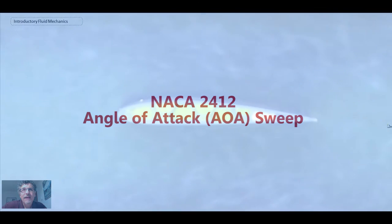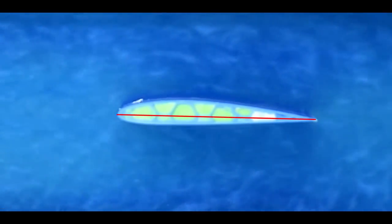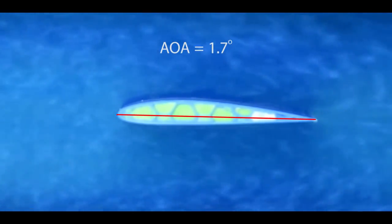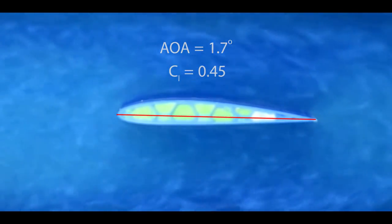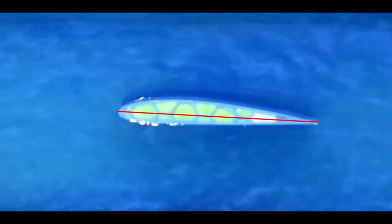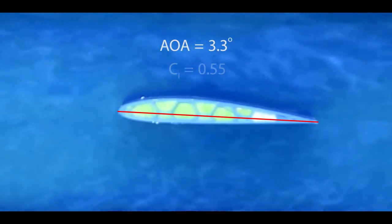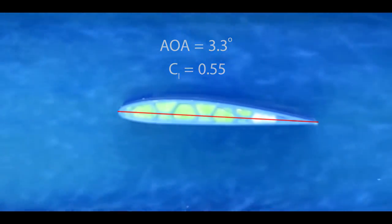So here we have the NACA 2412. I draw a chord line in there. And from that I'm able to calculate 1.7 degrees. Lift coefficient from experimental data is 0.45. Not from the data here, but that's from other curves that other people have collected. Again, figuring out the angle of attack. Here we have it at 3.3 degrees. Lift coefficient would be 0.55. You can see the flow is going smoothly over the airfoil.